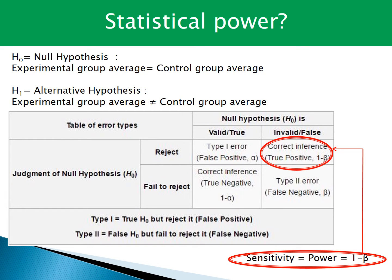In hypothesis tests, researchers assume a null hypothesis and an alternative hypothesis. They reject the null hypothesis when it is valid or invalid, and Type 2 errors appear at this time. The probability of rejecting a null hypothesis when it is wrong is called sensitivity — it is statistical power.